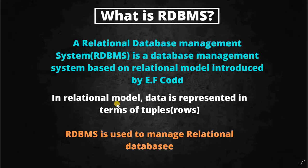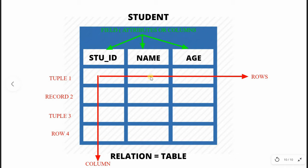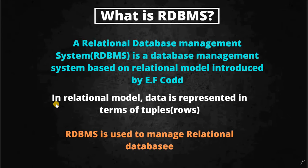In the relational model, data is represented in terms of tuples. Jab bhi koi ek table banate hain — for example yahan pe ek Student naam ka table hai — toh us table mein ek particular student ke liye uska jo information hai, hum usko ek row ke andar store karte hain. For example, ek student hai Ram naam ke, toh Ram ka student ID, uska name, uska age, address, phone number — yeh saari information hum ek row mein store karke rakhte hain. Isliye in relational model, data is represented in terms of tuples, that is rows.